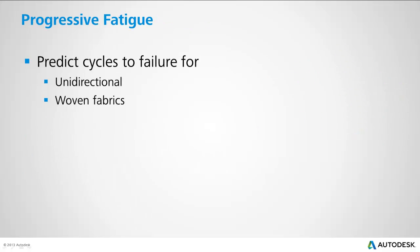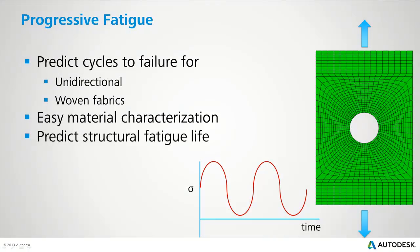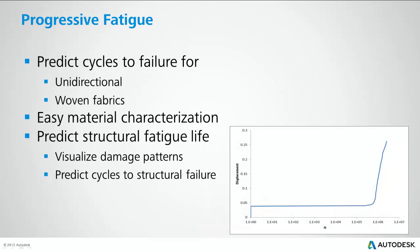We have developed and implemented a physics-based fatigue theory for progressive fatigue simulation within an FEA analysis. The fatigue solution is developed to predict the number of cycles to failure at the constituent level for both unidirectional and woven materials, including the newly introduced satin fabrics. The additional material characterization within Material Manager for fatigue analysis is very simple and straightforward. The user can now visualize damage patterns and cycles to failure anywhere within the composite part, as well as identify the cycles to global failure of the composite structure.